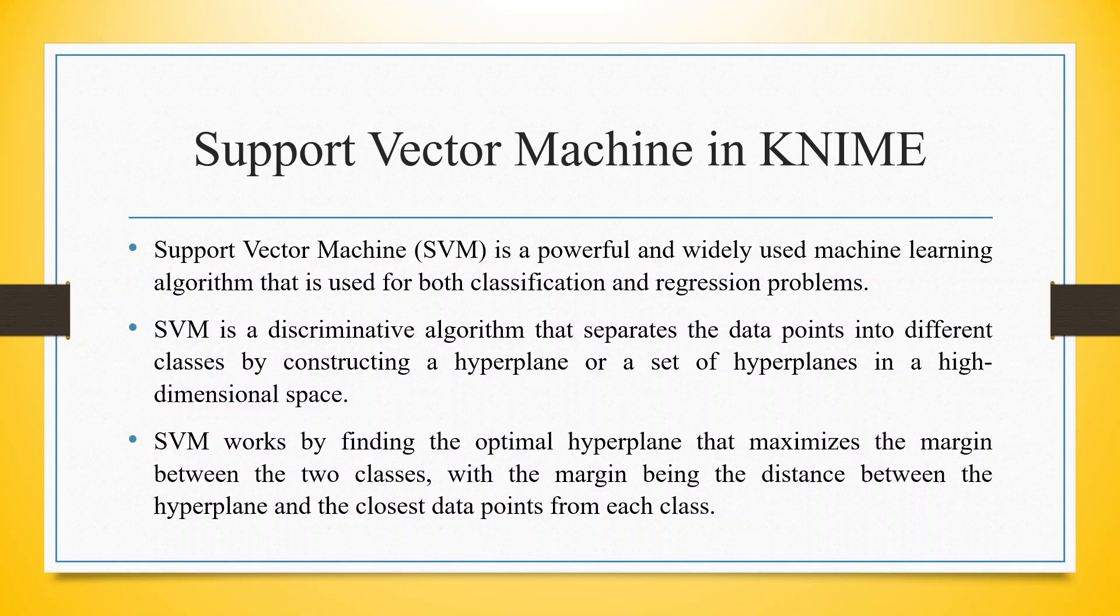SVM is a discriminative algorithm that separates the data points into different classes by constructing a hyperplane or a set of hyperplanes in a high dimensional space. SVM works by finding the optimal hyperplane that maximizes the margin between the two classes, with the margin being the distance between the hyperplane and the closest data points from each class.